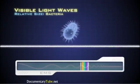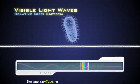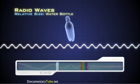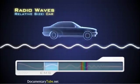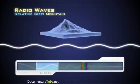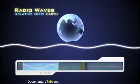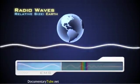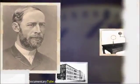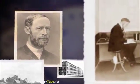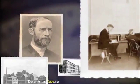While visible light is measured in minute fractions of an inch, radio waves vary from about 19 centimeters — about the length of a water bottle — to waves the length of cars, ships, mountains, all the way up to monstrous waves longer than the diameter of our planet. Heinrich Hertz discovered radio waves in 1888. The first commercial radio station went on the air in Pittsburgh, Pennsylvania on November 2nd, 1920.